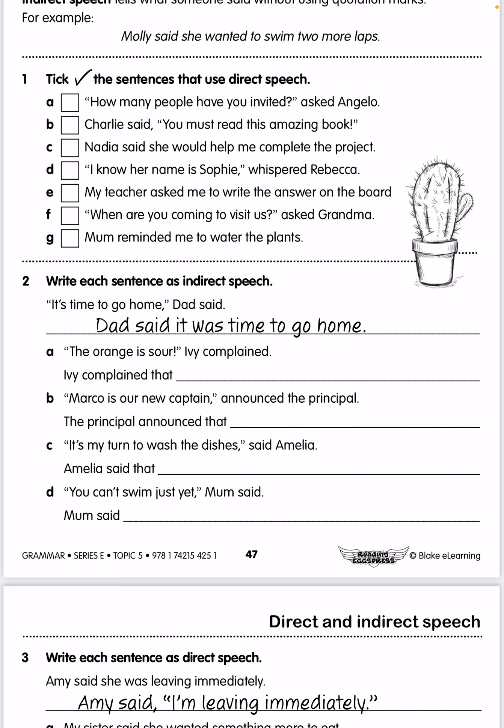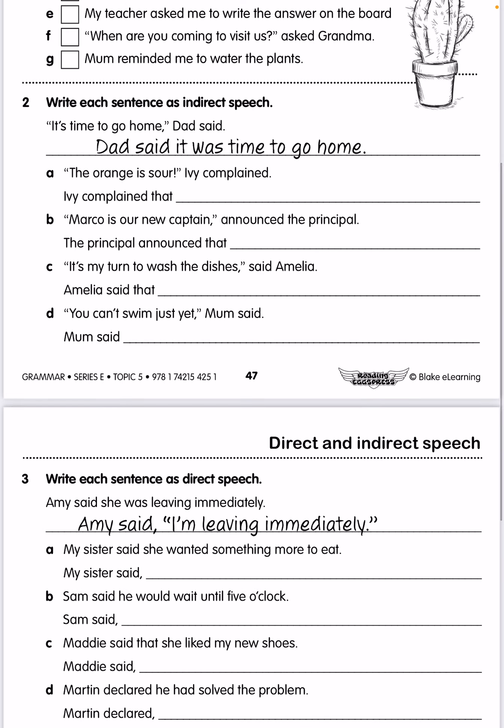In question number one, you're going to take the sentences that use direct speech. If you were listening and paying attention, there's a really good clue as to which ones those are — something you can look for in the sentence. In question number two, you're going to look at the direct speech sentences and rewrite them as indirect speech sentences. The first one's been done as an example: 'It's time to go home, dad said.' As indirect speech, that becomes: dad said it was time to go home. So you're going to do A, B, C, and D — rewrite those speech mark sentences as indirect speech.